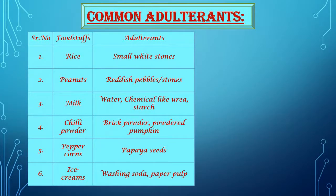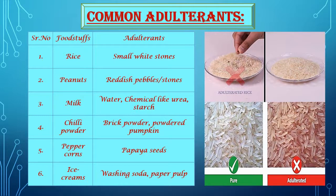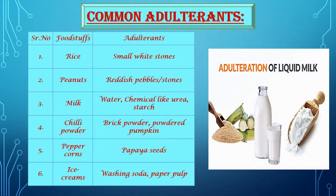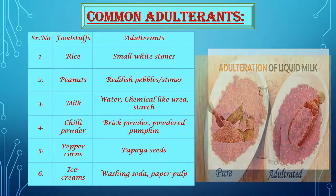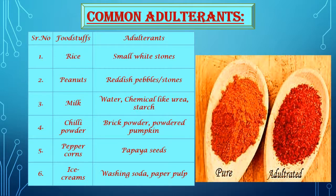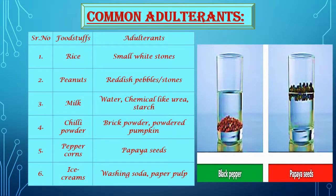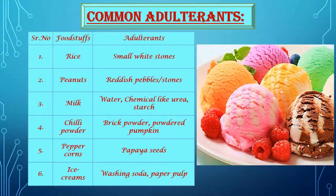Now let us see some common adulterants added to food materials. In rice, small white stones are added. In peanuts, reddish pebbles or stones are added. In milk, adulterants added are water, chemicals like urea and starch. In chili powder, brick powder and powdered pumpkin are added. In peppercorn, papaya seeds are added. And in ice cream, washing soda and paper pulp are added. Students, always remember that adulteration of food is a crime. Do not eat adulterated foods.